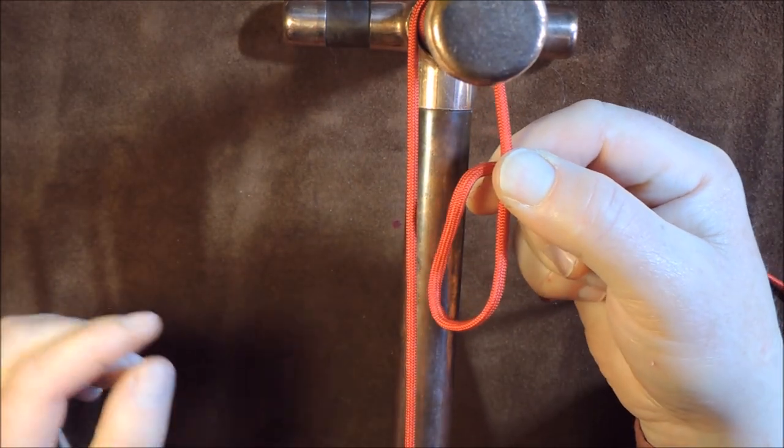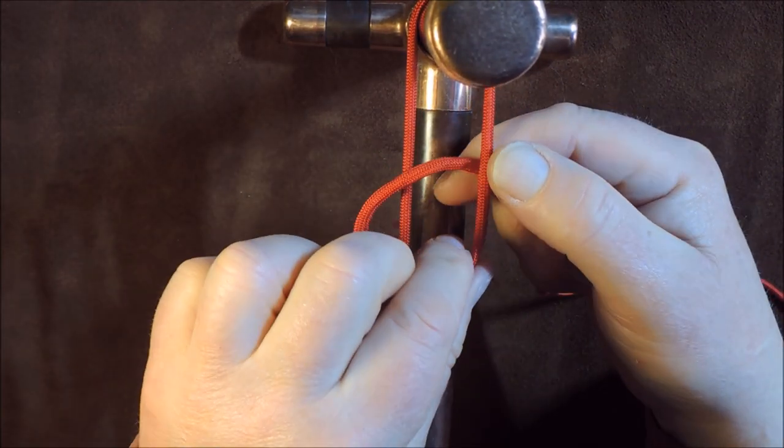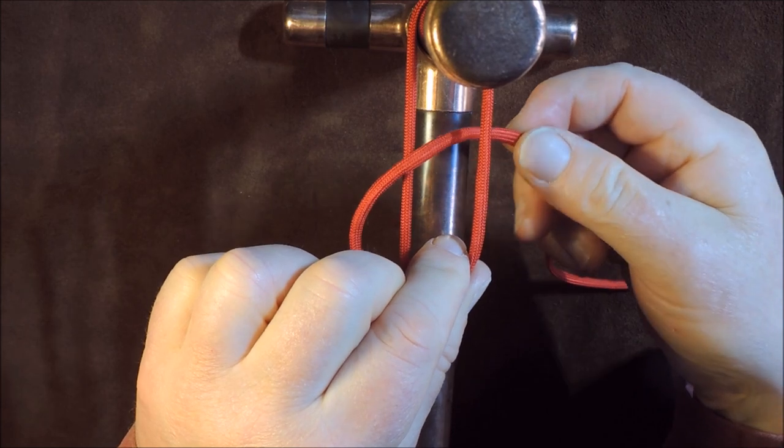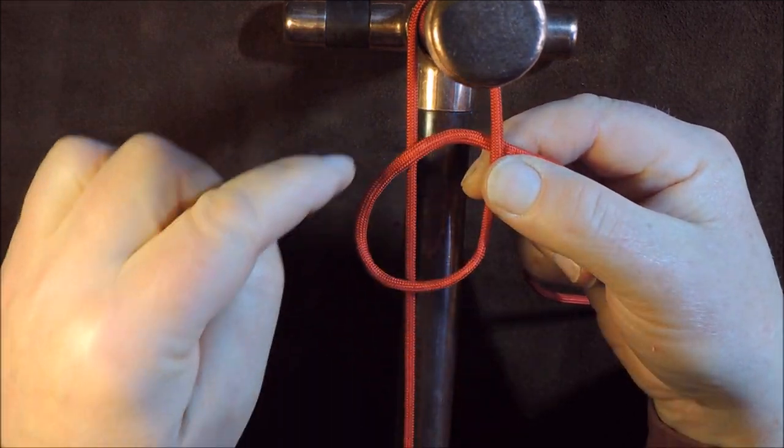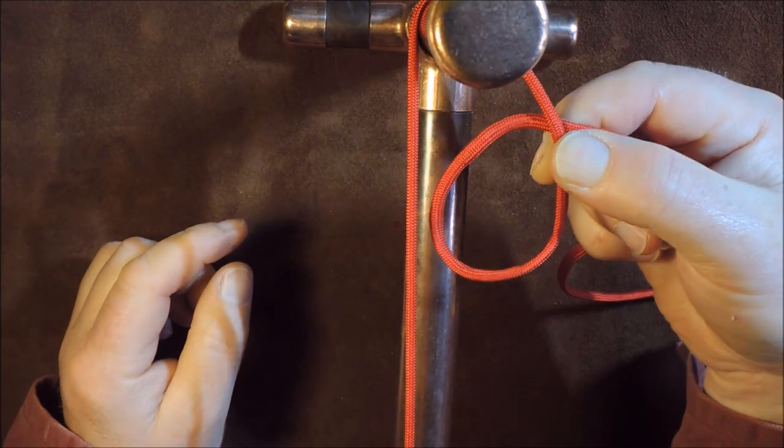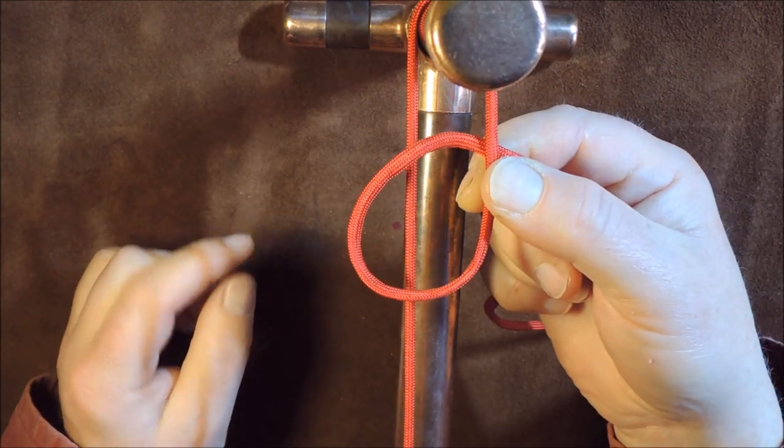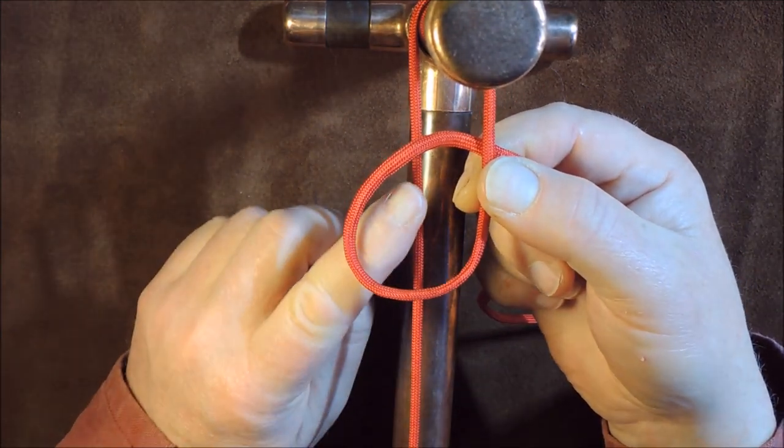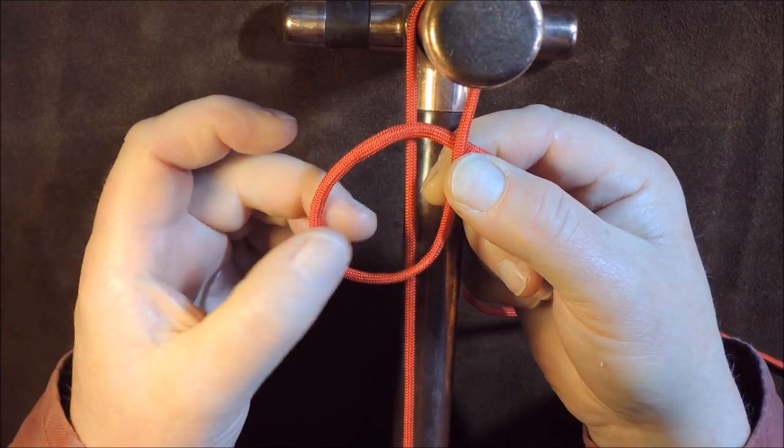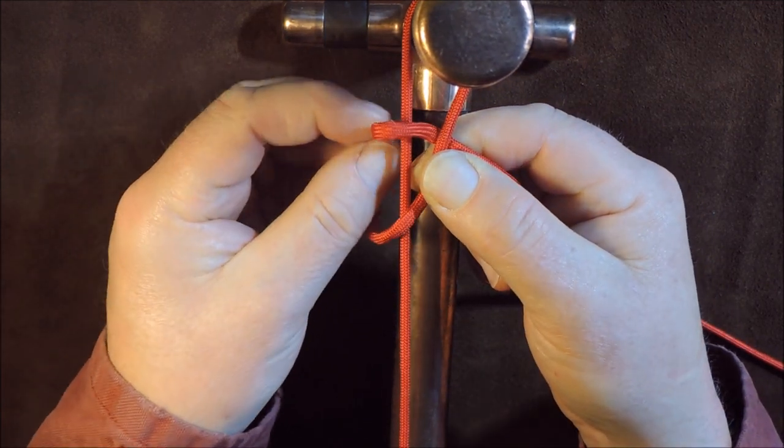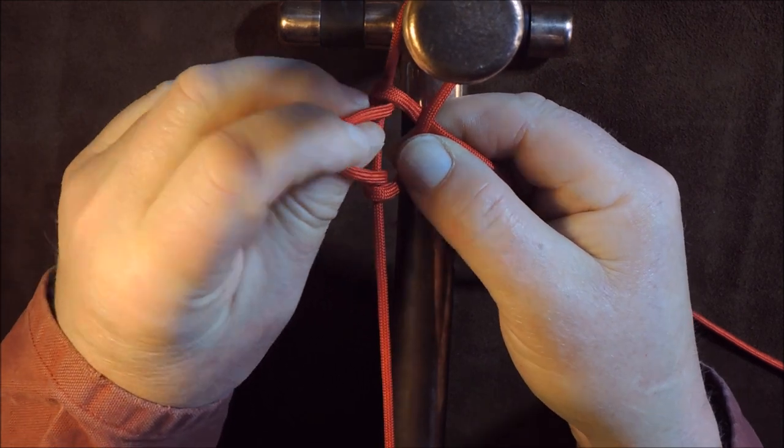underneath itself, like so. So that cord there is going round like so and then underneath itself. The next thing I do is I bring it across the standing end, which is this line here, and that loop there I pass it through that hole once, like so.